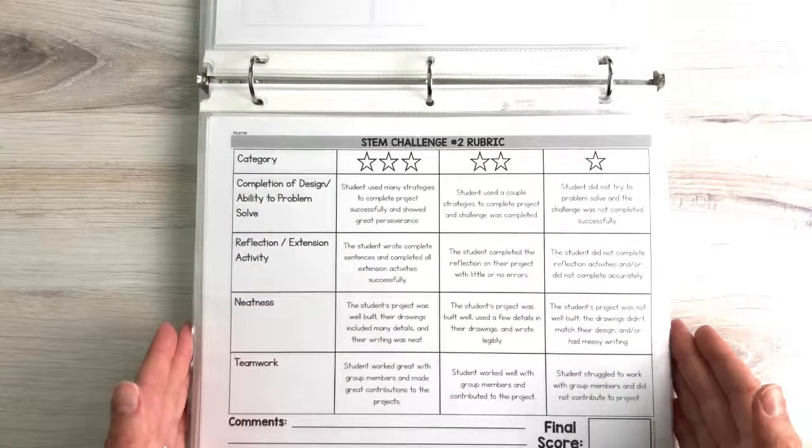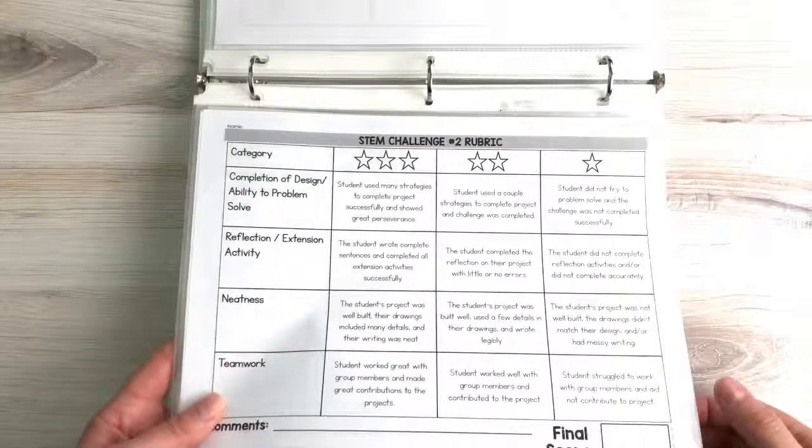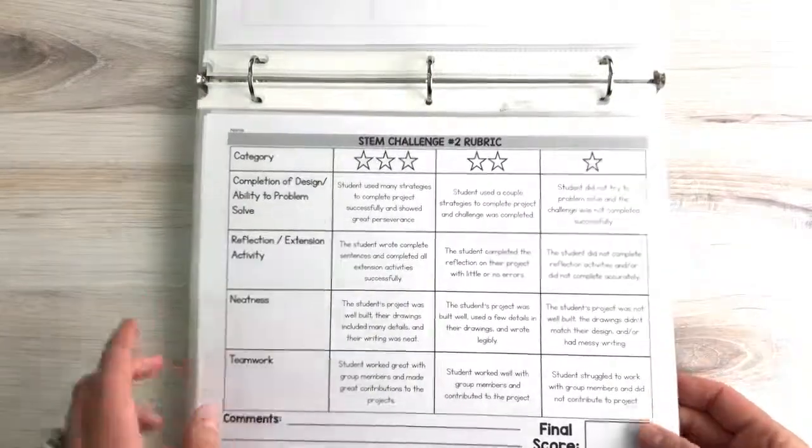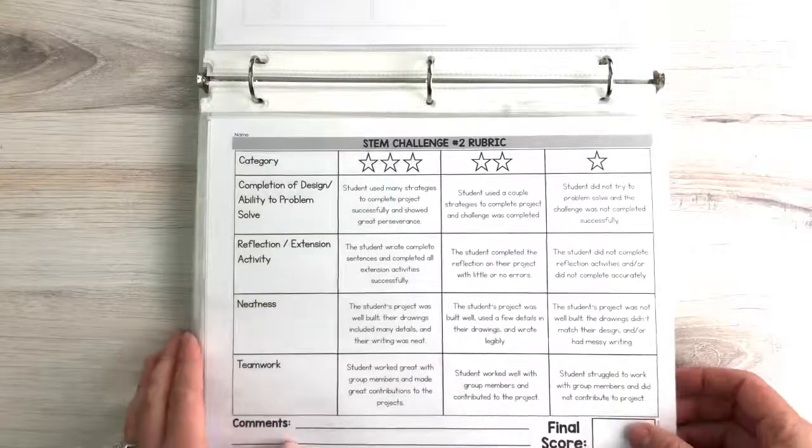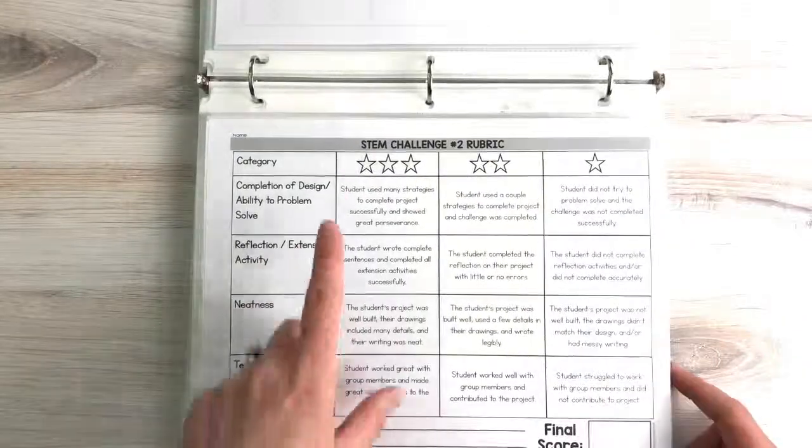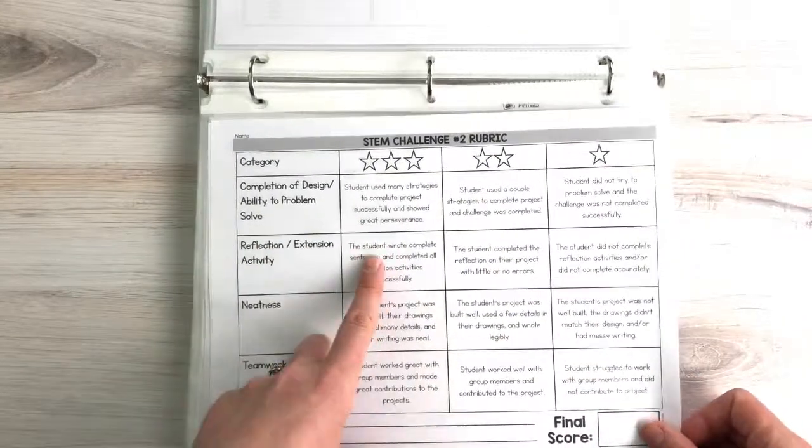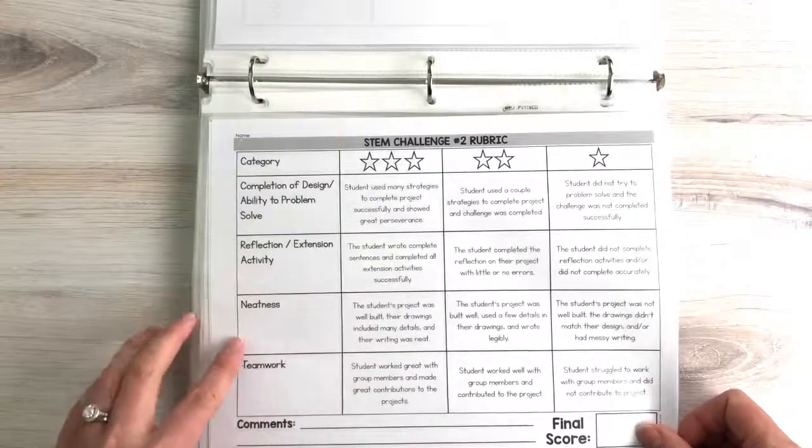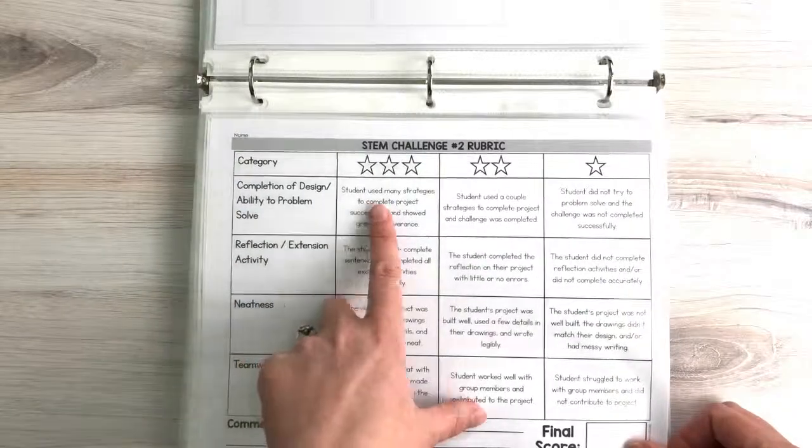The last piece is really important because sometimes it's hard to record data. What we've done is created a rubric where it's very simple—you just circle based on the categories of completion, reflection, neatness, and teamwork, and there's a star system.